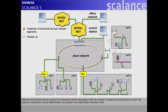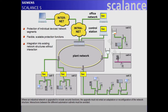The protection mechanisms must be highly flexible and scalable to the requirements of the job in hand. Where an industrial network is upgraded to include security functions, the upgrade must not entail an adaptation or reconfiguration of the network structure. Interactions between the different automation subnets must be avoided. The configuration, handling, and maintenance of a security concept for an industrial network must be feasible with simple means by automation specialists without specialist security knowledge.